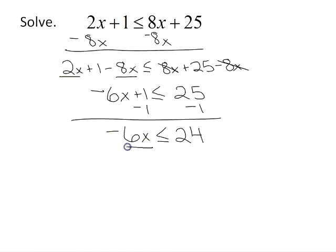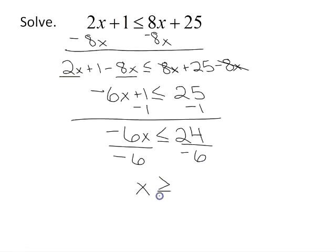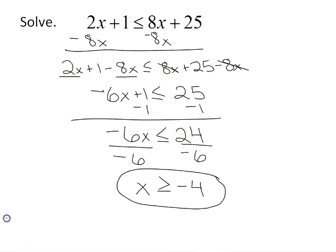To get x by itself I need to divide by negative 6. This is when you have to be careful with inequalities — when you divide by a negative, the inequality symbol reverses and points in the other direction. So now I have x is greater than or equal to negative 4. My solutions are any numbers that are bigger than or equal to negative 4.